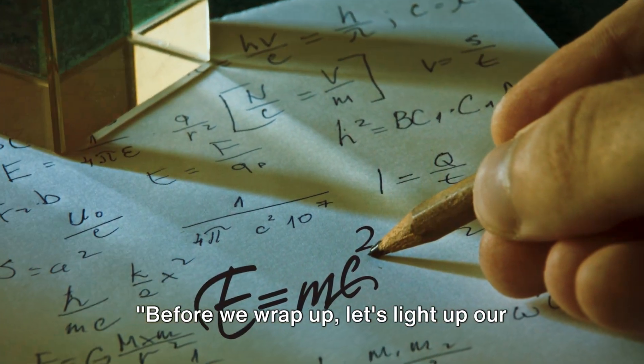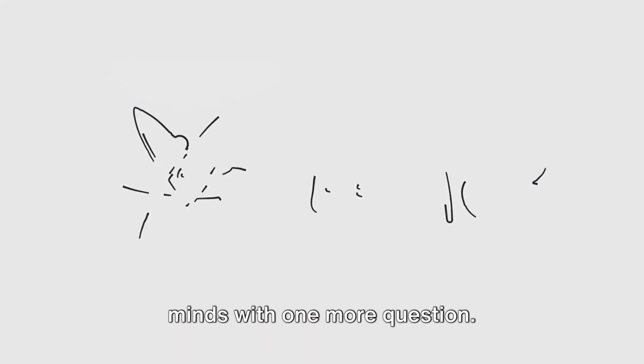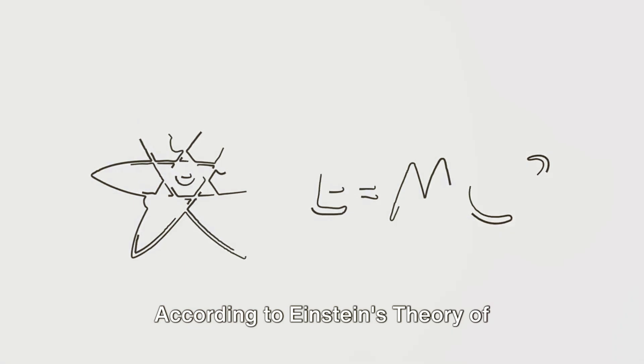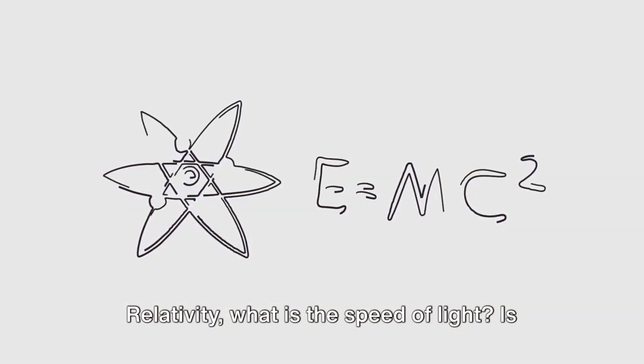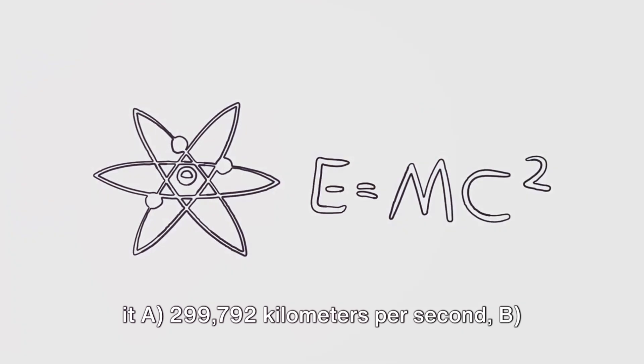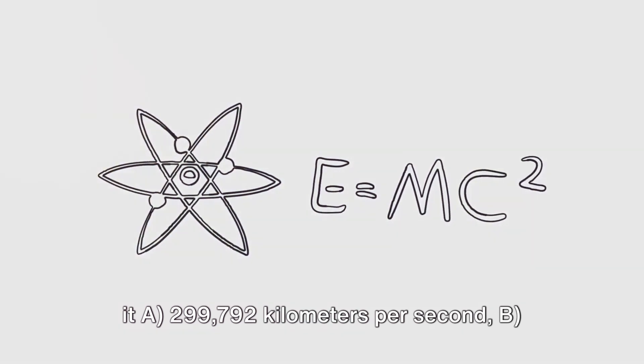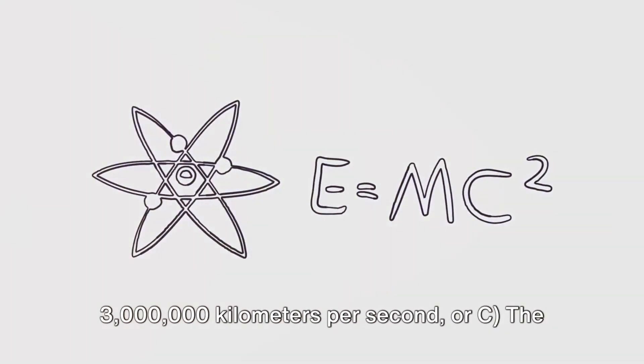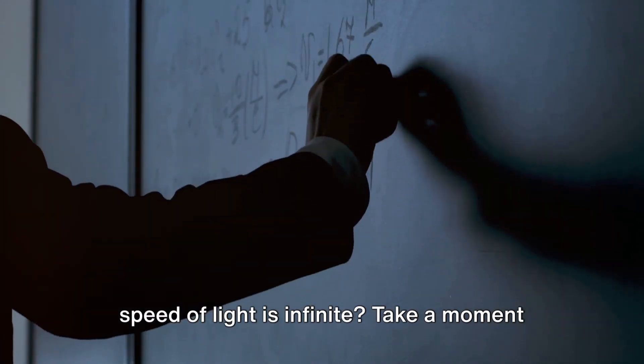Before we wrap up, let's light up our minds with one more question. According to Einstein's theory of relativity, what is the speed of light? Is it A. 299,792 kilometers per second, B. 3 million kilometers per second, or C. The speed of light is infinite.